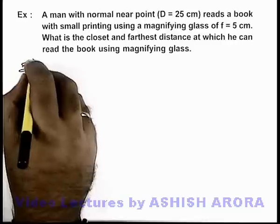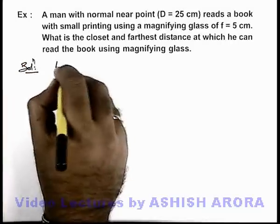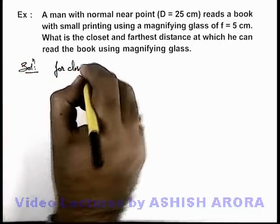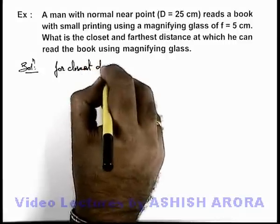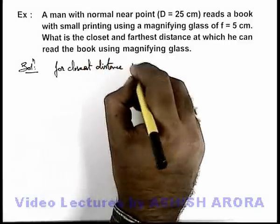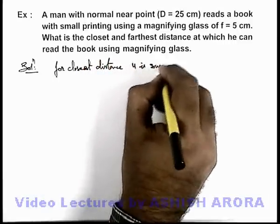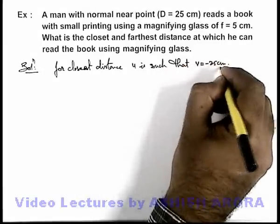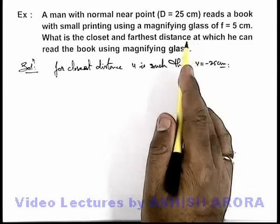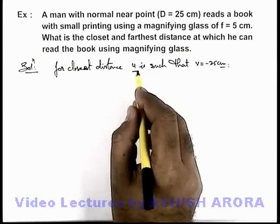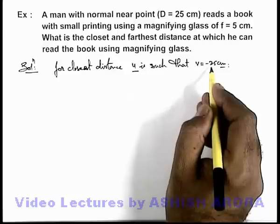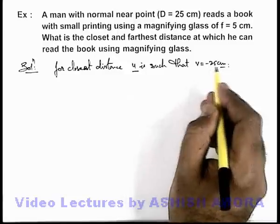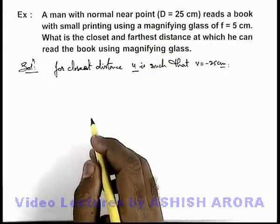Now in this situation, we can write for closest distance, u is such that v is equal to minus 25 centimeters. That means the lens should be kept at such a distance u so that the image is produced on the same side at 25 centimeters, that is the near point of the eye.